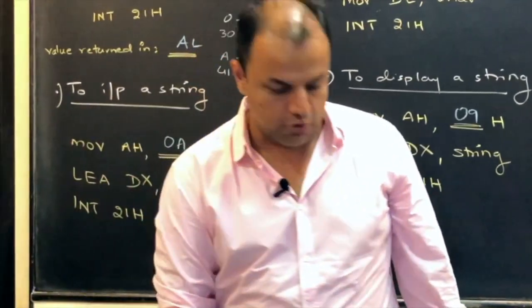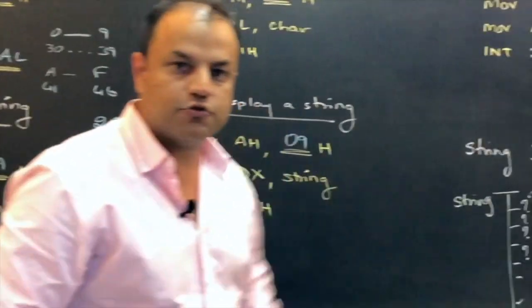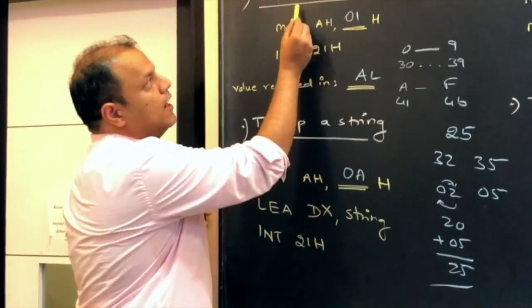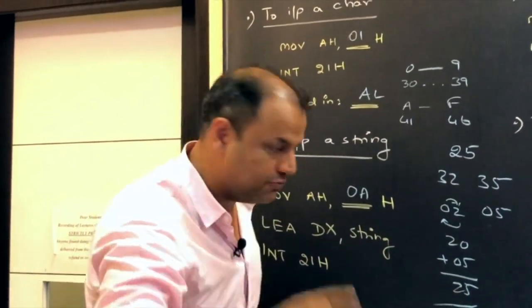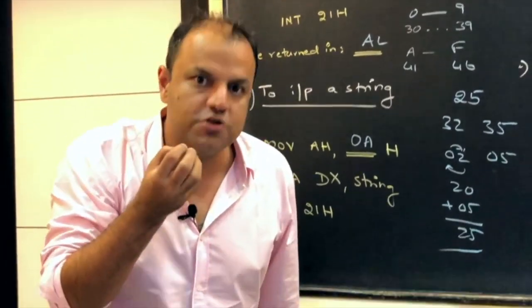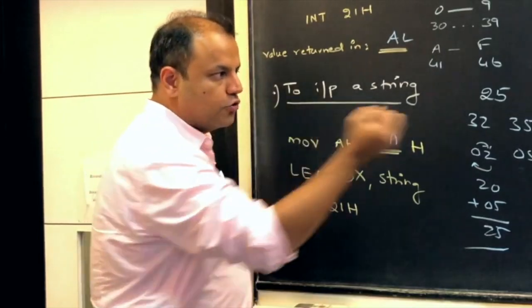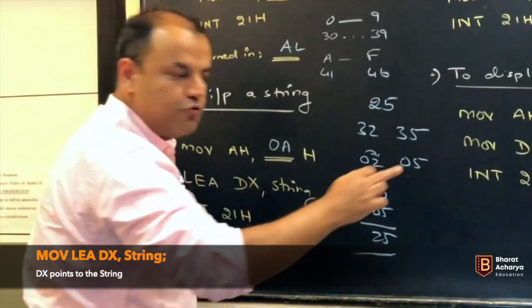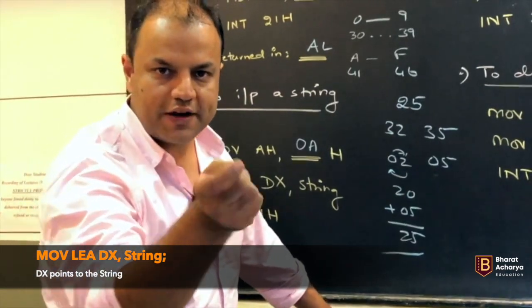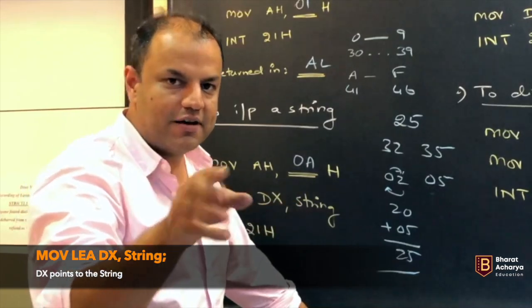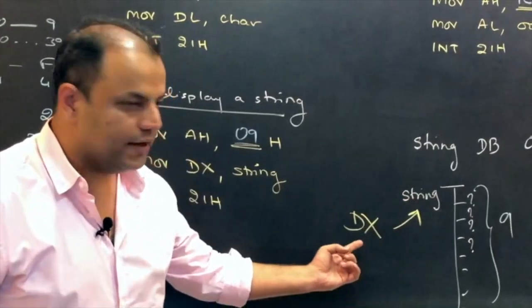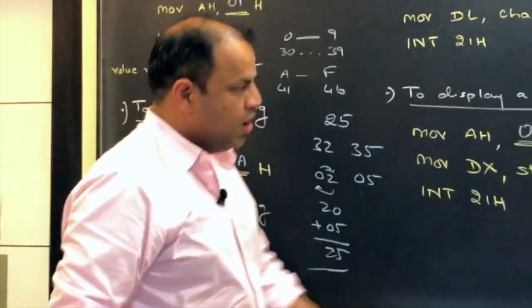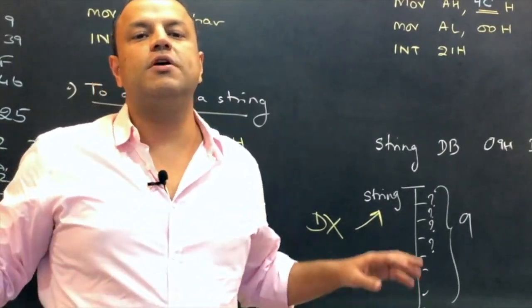Now, you have created space to accept the input from the user. Now, when you want to do int21 to input the string, you want that the user's input string comes and gets stored into the array. The code for performing the function of inputting a whole string is move AH, 0A. Like to input a character, you write 01. To input a string, you write 0A. But that's not done. There is one more thing you need to do. User will enter a string. Processor is going to give you a whole string. Where will that string be stored? It can't be stored in AL register. AL is just one register. This is a whole string. So, you have created the string. You just need DX to point to the string. I repeat, you need DX to point to the string. You write the instruction LEA. LEA stands for load effective address. Load effective address. Effective address is just another word for offset address. Load the offset address of string into DX.